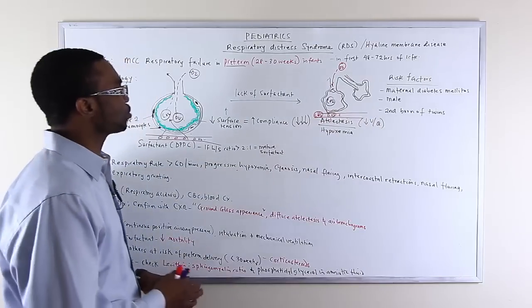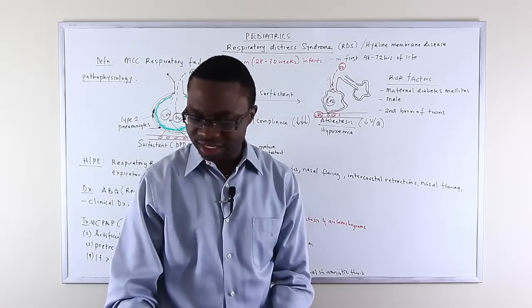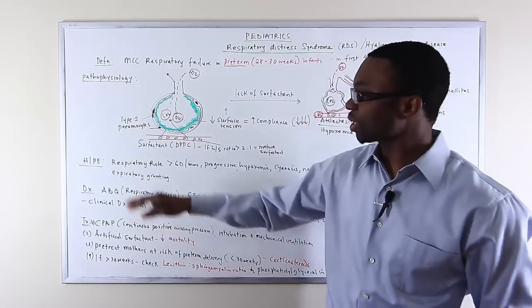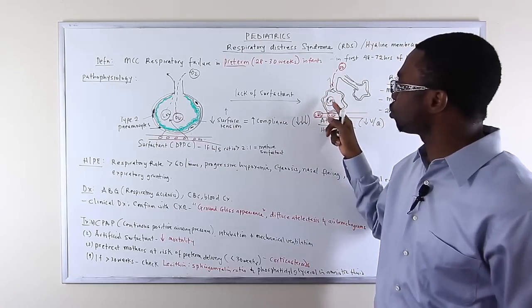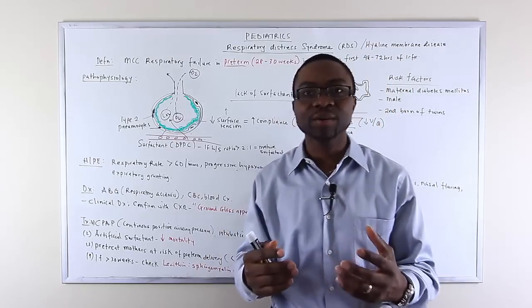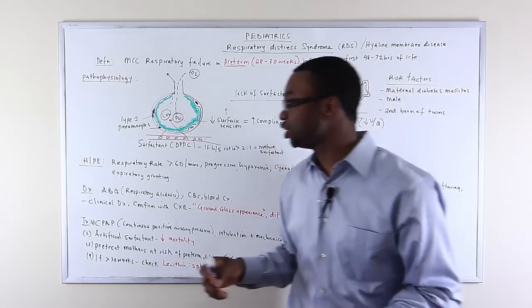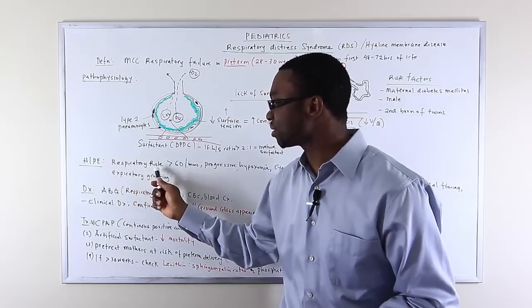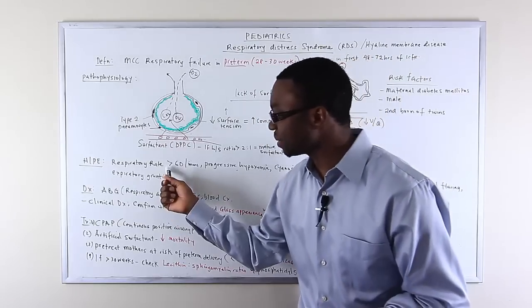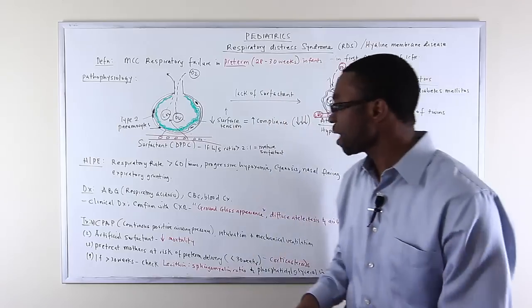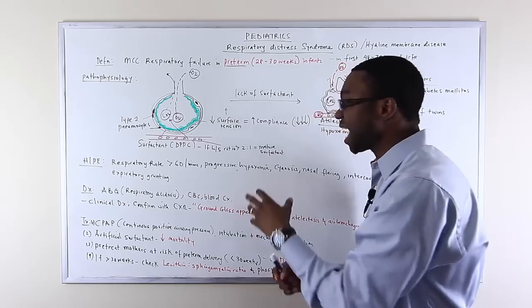Now that we know the risk factors, we understand the pathophysiology. What do you see on history and physical exam? This is a newborn that's been born. What's going to happen when a neonate has so much CO2 build up in their lungs and their lungs are collapsed? Their respiratory rate is going to increase because they're going to get respiratory acidosis. They're going to be hypercapnic and tachypneic with respiratory rate greater than 60.